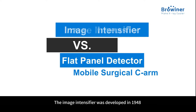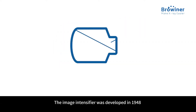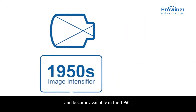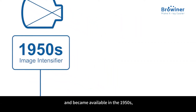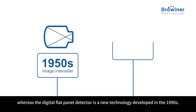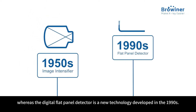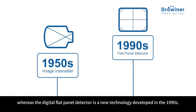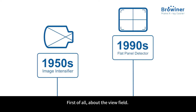The image intensifier was developed in 1948 and became available in the 1950s, whereas the digital flat panel detector is a newer technology developed in the 1990s.